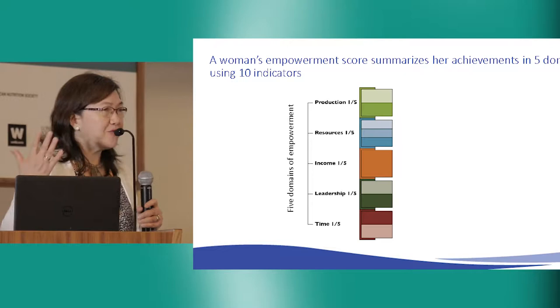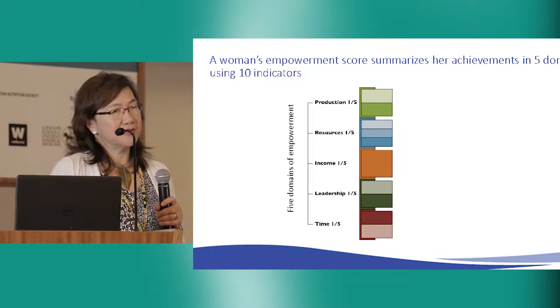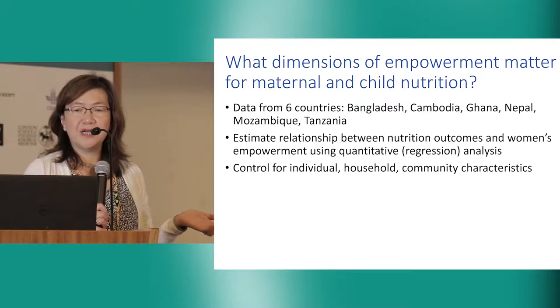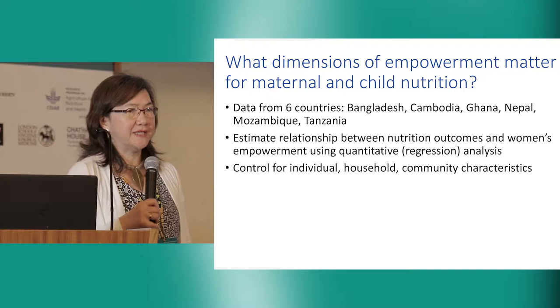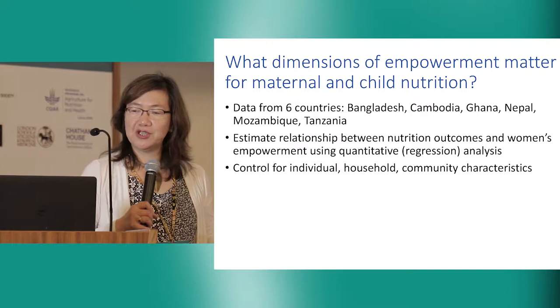There are five domains and ten indicators which make up these domains. We have data from six countries: Bangladesh, Cambodia, Ghana, Nepal, Mozambique, and Tanzania — from the Feed the Future datasets. They are large datasets, though not all nationally representative except for Bangladesh. We estimate the relationship between nutrition outcomes and women's empowerment using regression analysis with controls for individual, household, and community characteristics.